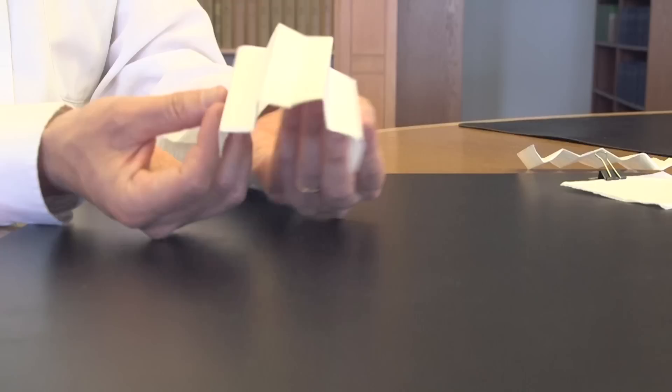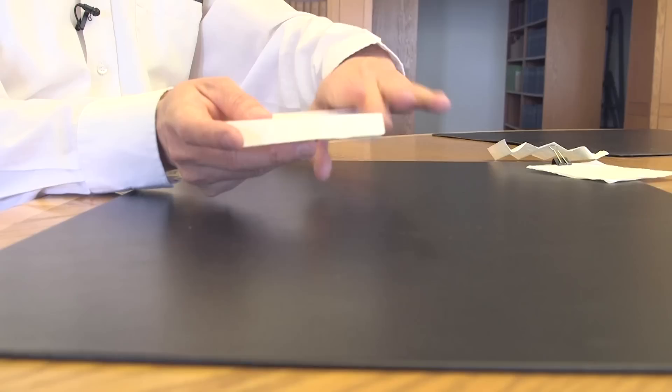If you crease paper like this, it's quite flexible in this direction. In this direction, it becomes stiff. You can't bend it anymore. Now, that's the ancient technology of corrugated surface, of course.